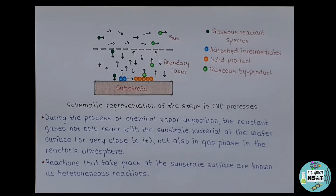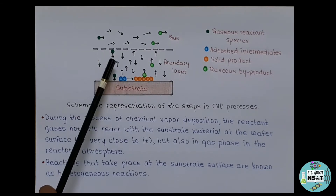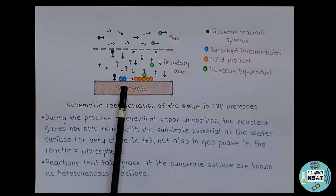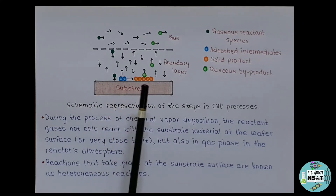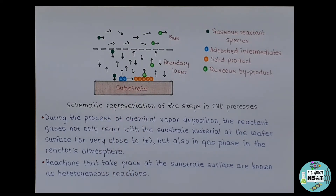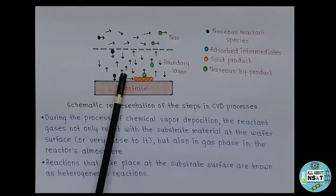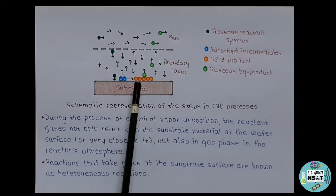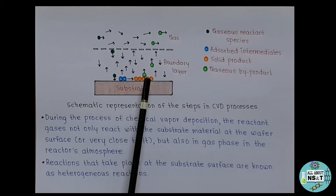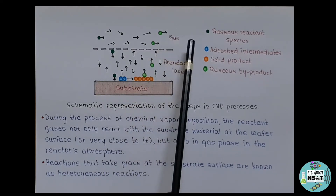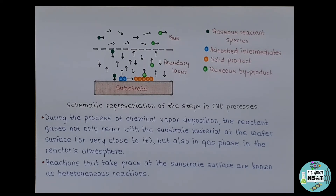In the process diagram: dark green circles indicate the gaseous reactant species, blue circles are the adsorbed intermediates, orange circles are the solid product, and faint green circles are the gaseous byproducts. First there is diffusion of reactants through the boundary layer, then adsorption on the heated substrate, followed by chemical reaction, deposition of the solid product, desorption of adsorbed species, and finally diffusion of byproducts out of the chamber.